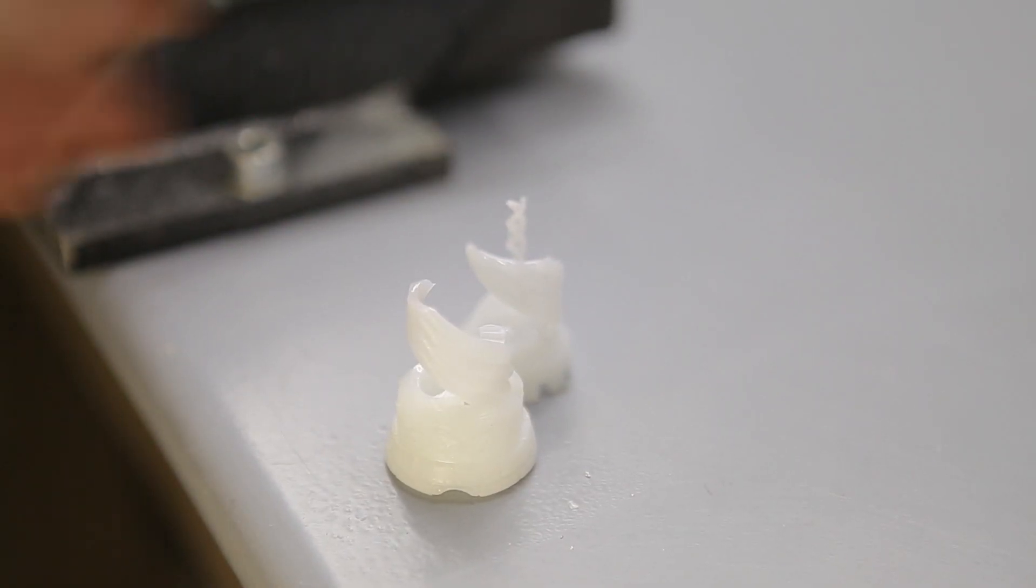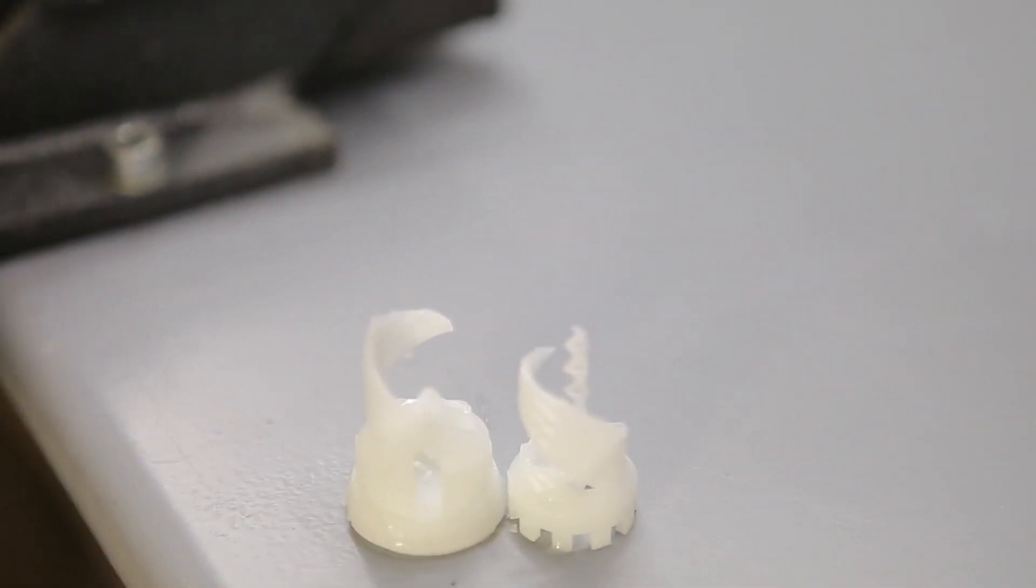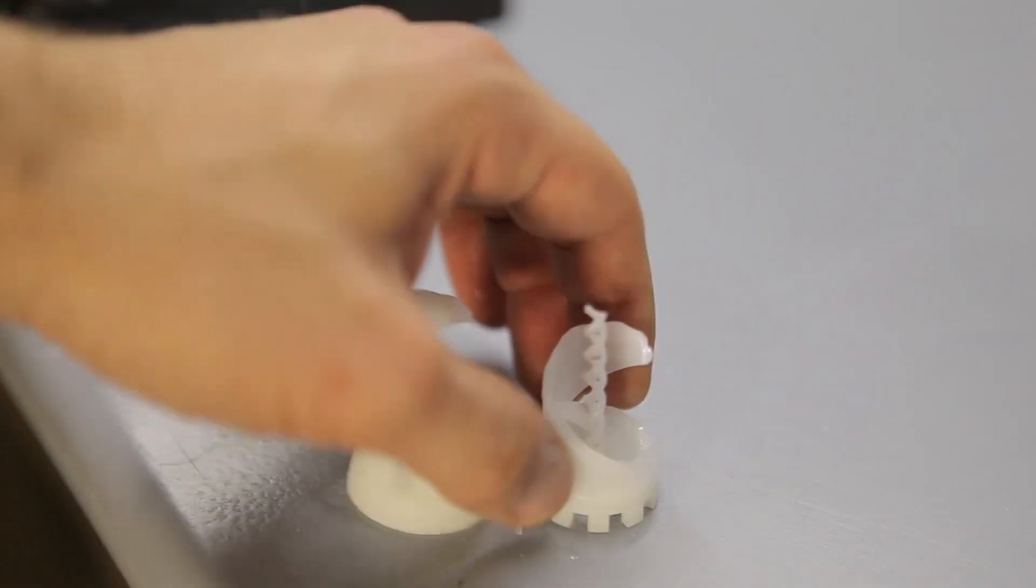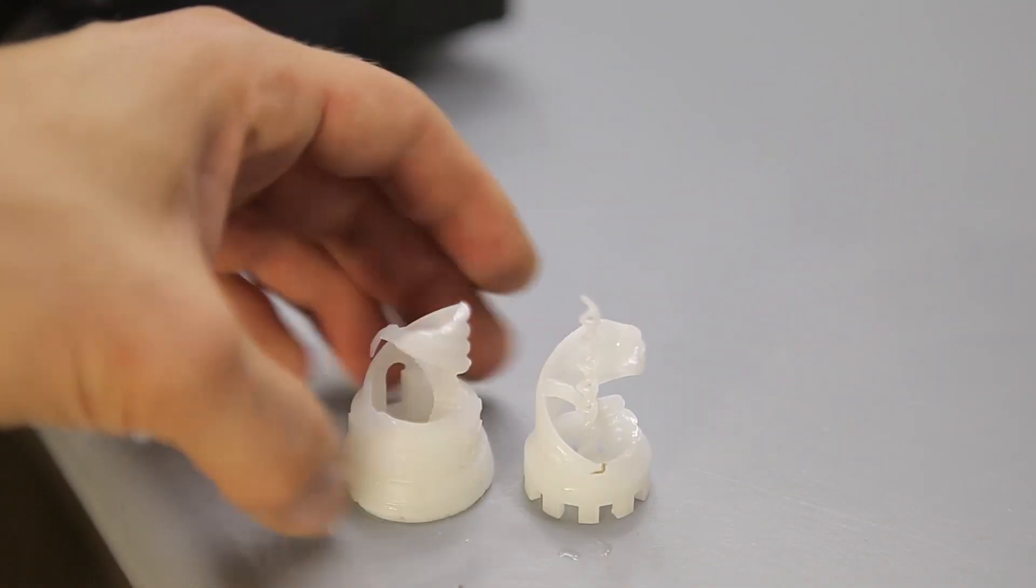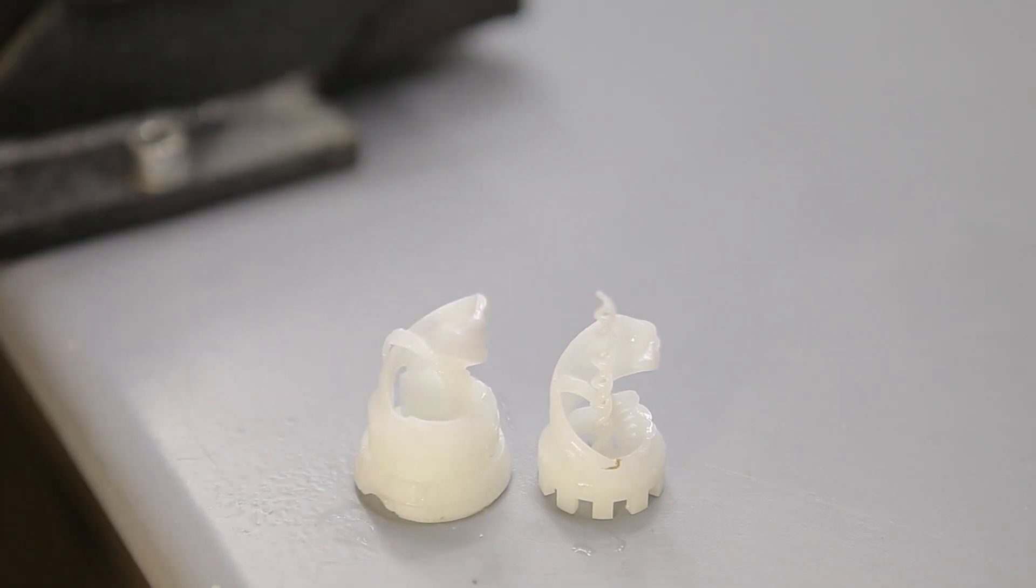And this is what it looks like after it broke. And it looks like layer delamination isn't really much of a problem for these SLA printed parts. It acts and feels like a part that was cast or injection molded as a whole.